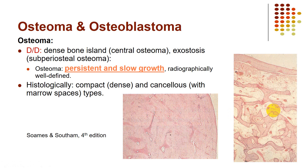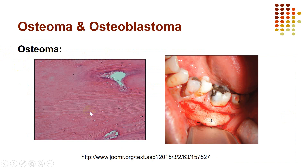Osteoma is a benign tumor showing slow, continuous expansion. Radiographically it will be well defined. Histologically there are two types: compact or cancellous. This bone is compact and vital because we can see osteocytes within lacunae. In contrast, in osteomyelitis the sequestrum shows non-vital bone with empty lacunae. Here we see vital lamellar bone with horizontal parallel lines indicating mature bone.